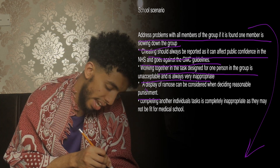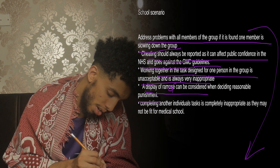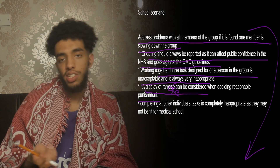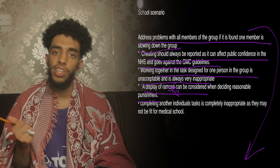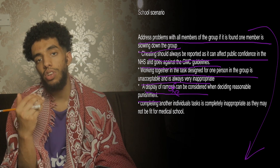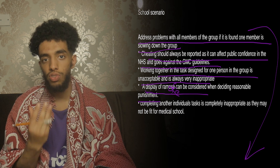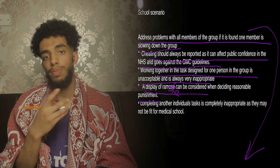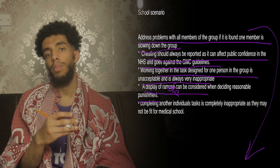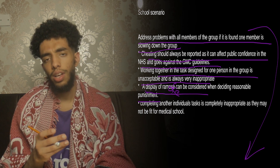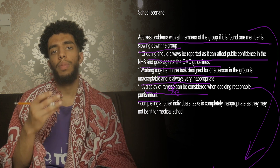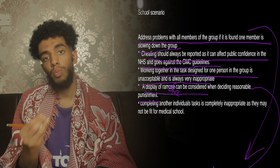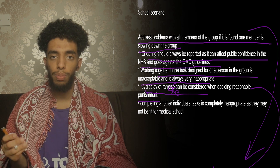The fourth principle: a display of remorse can be considered when deciding a reasonable punishment. This is not for the students — it's for the teacher. Showing remorse means the person acknowledges what they've done is wrong and wants to change. For example, if the teacher wants to expel them, that may be inappropriate if remorse is shown; a smaller punishment may be more appropriate. If no remorse is shown, then a stronger punishment is fully appropriate.